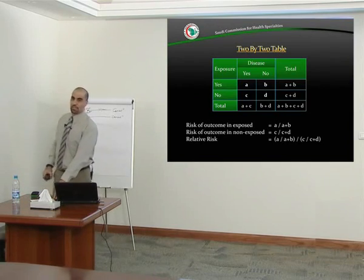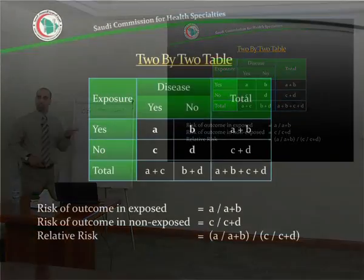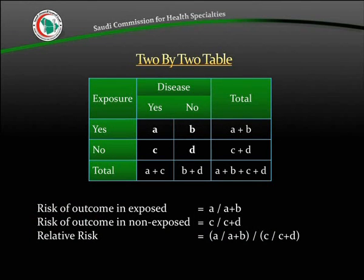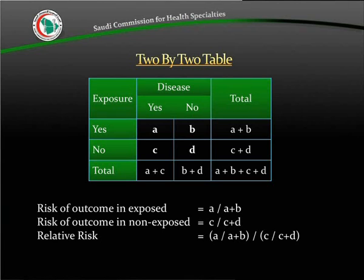In a cohort study, the two-by-two table is used, but instead of prevalence rate, we calculate incidence — the occurrence of new cases. So we do not calculate prevalence ratio or odds ratio. We calculate relative risk, which is calculated exactly like the prevalence rate ratio: A over A plus B gives the risk in the exposed group, and C over C plus D gives the risk in the unexposed group.